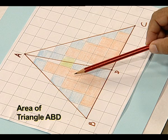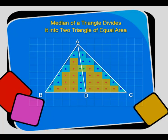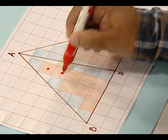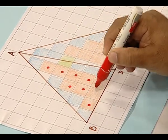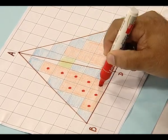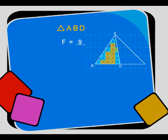Now let us find the area of triangle ABD. Let us count the number of fully filled squares, denoted by a red dot: 1, 2, 3, 4, 5, 6, 7, 8, 9. So the fully filled squares are 9 in number.